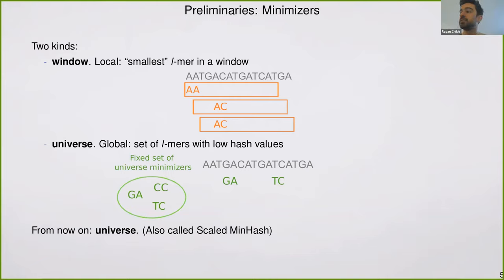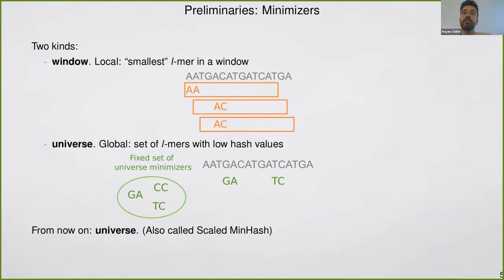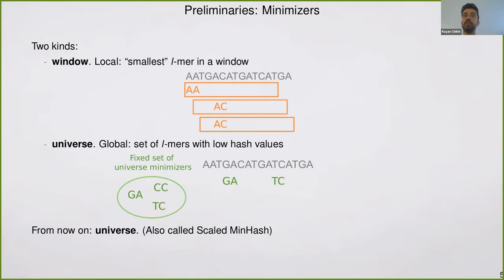There has been some extensive discussion on Twitter about how to name universe minimizers, as they have been introduced by other authors under different names. The scaled minhash is also a way to define the same object as universe minimizers, and they also bear similarities with syncmers. From now on, in our minimizer space de Bruijn graphs, we will use universe minimizers, although window minimizers could also be used.